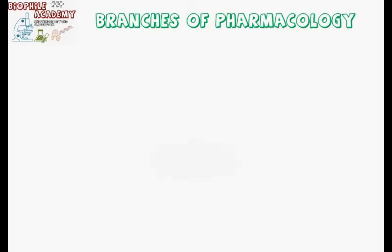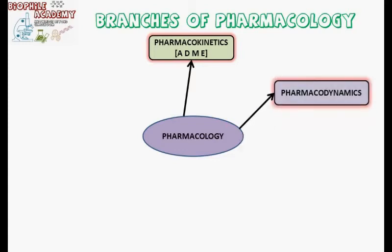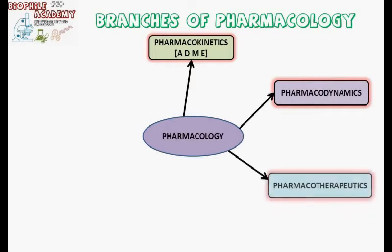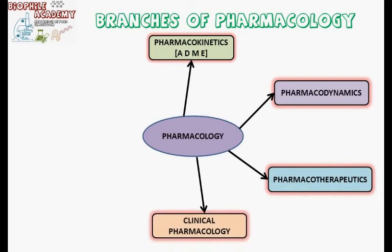Now let us move to branches of pharmacology. Pharmacokinetics — simply, it is what the body does to the drug; it deals with absorption, distribution, metabolism, and excretion processes of drug molecules. Pharmacodynamics — it is what a drug does to the body; it deals with the study of biological effects produced by the drug. Pharmacotherapeutics deals with clinical applications of both pharmacokinetic and pharmacodynamic aspects of a particular drug.